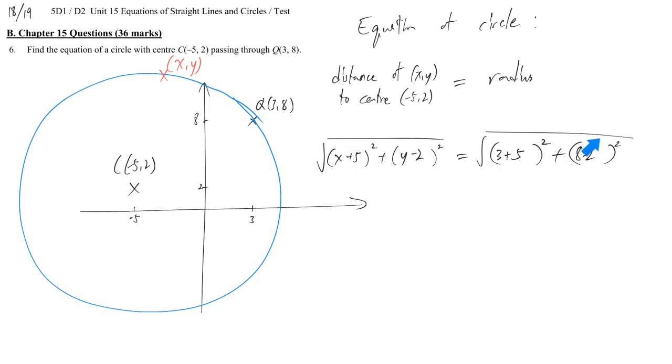Because both sides we have square root, so we may just simply cancel it out by taking square on both sides. (x + 5) squared plus (y - 2) squared is equal to this one. You may just calculate it. You will get 100.